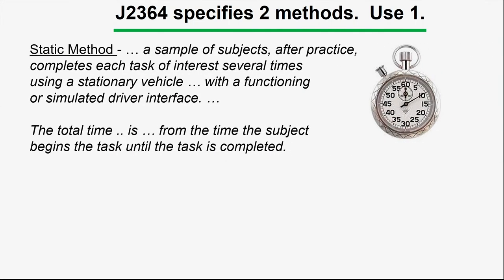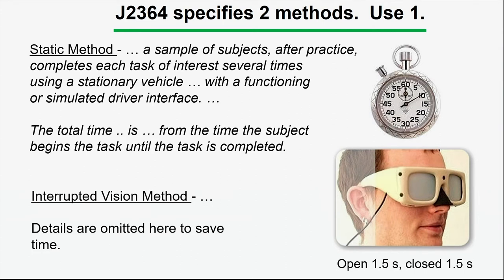SAE J2364, because it contains a method, actually specifies two of them. The first is called the static method, in which people do a task, are timed on how long it takes, and whether it exceeds some deadline determines whether a task passes or fails a requirement. In addition, there's also the interrupted vision method. The subject wears a pair of goggles — open for a second and a half, then closed for a second and a half. This simulates looking down at the device, then back to the road, with the closed period corresponding to when you're looking at the road.